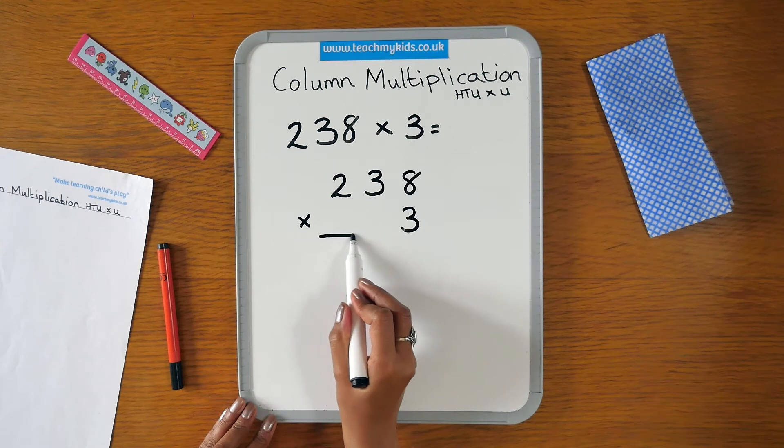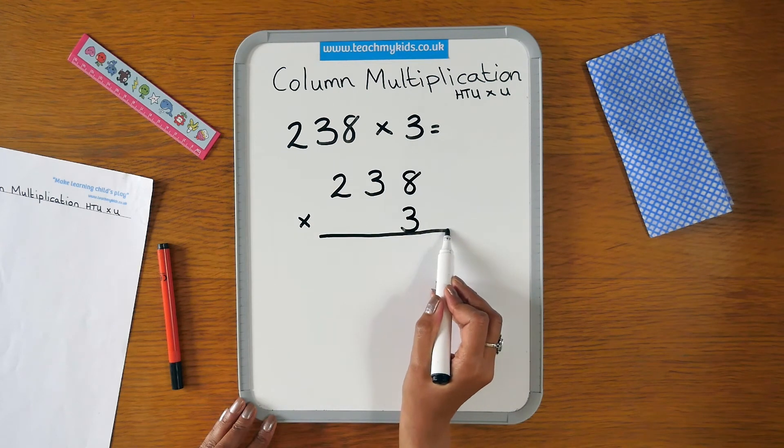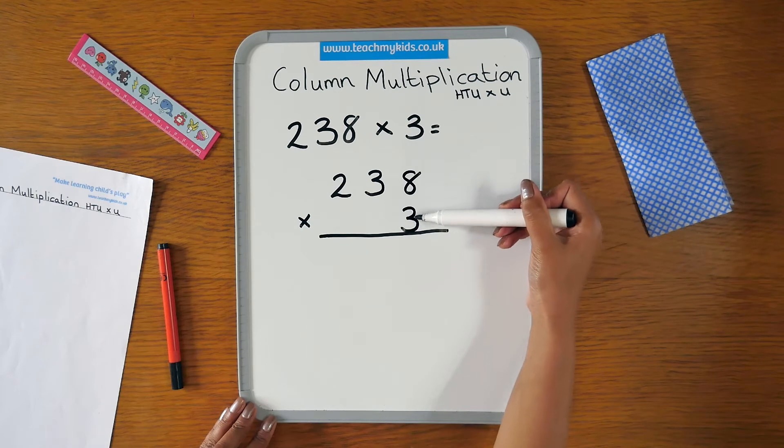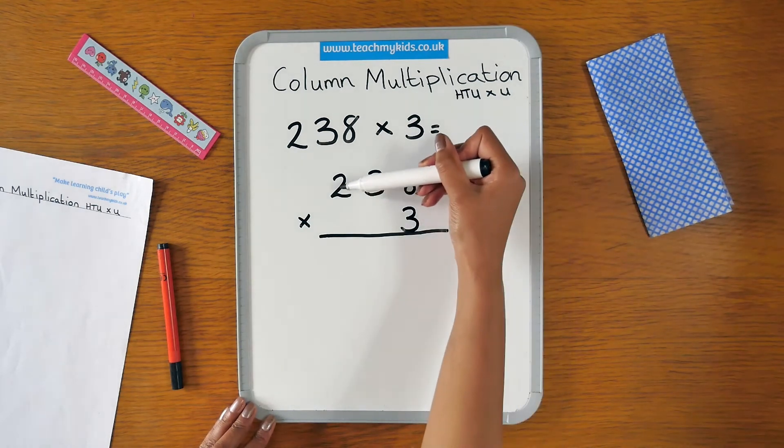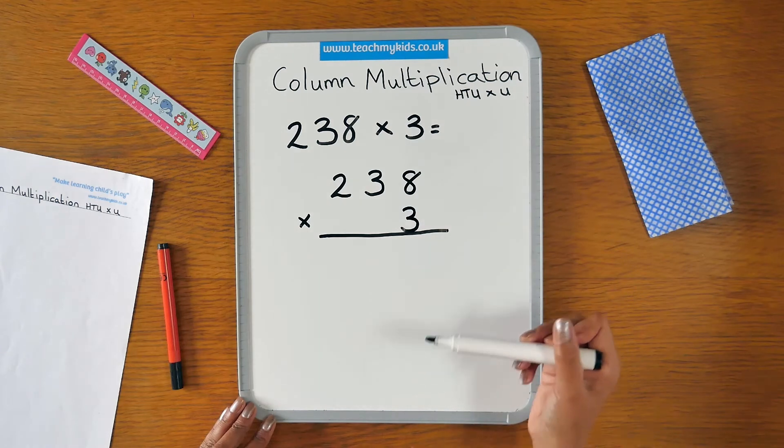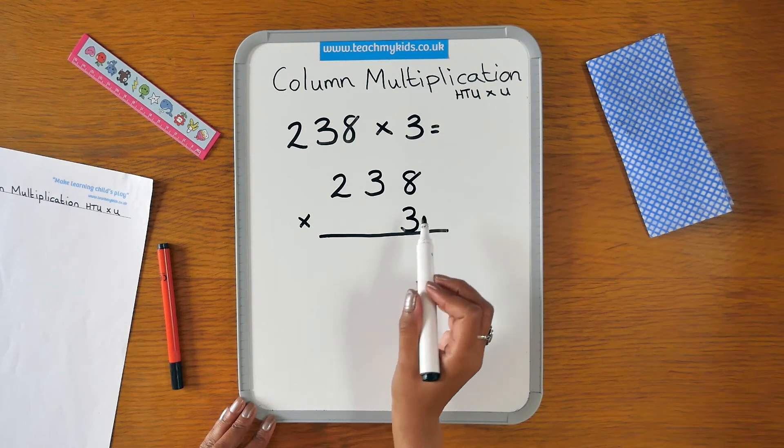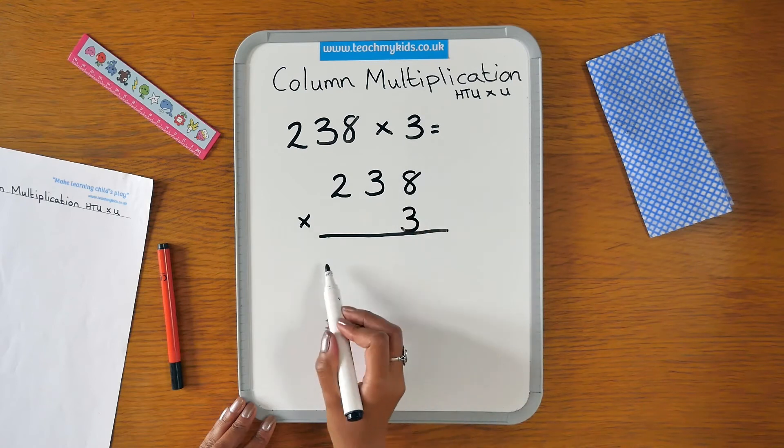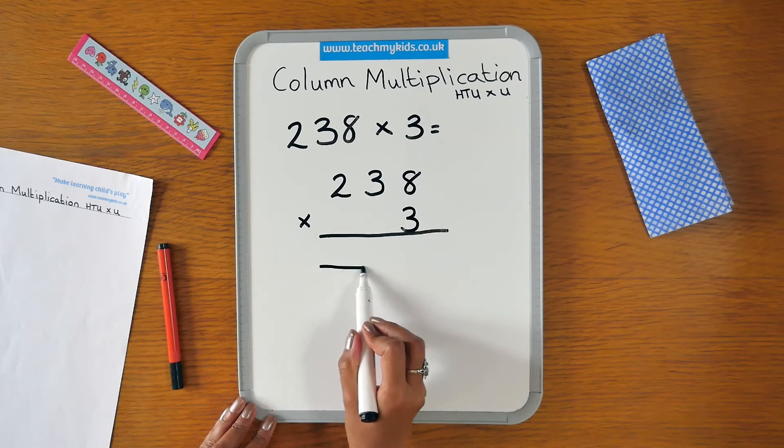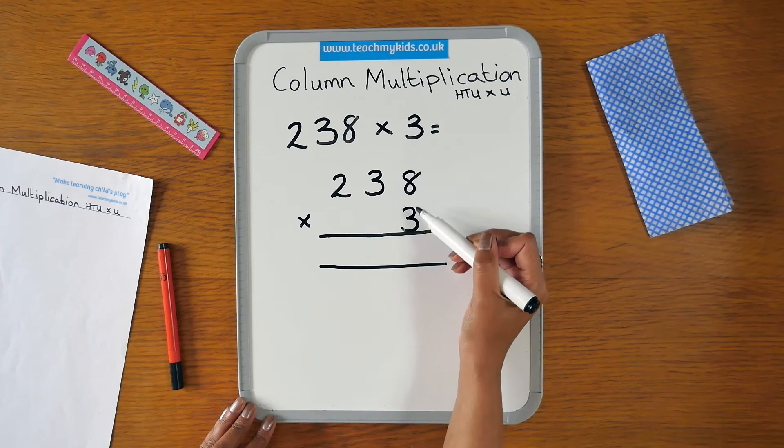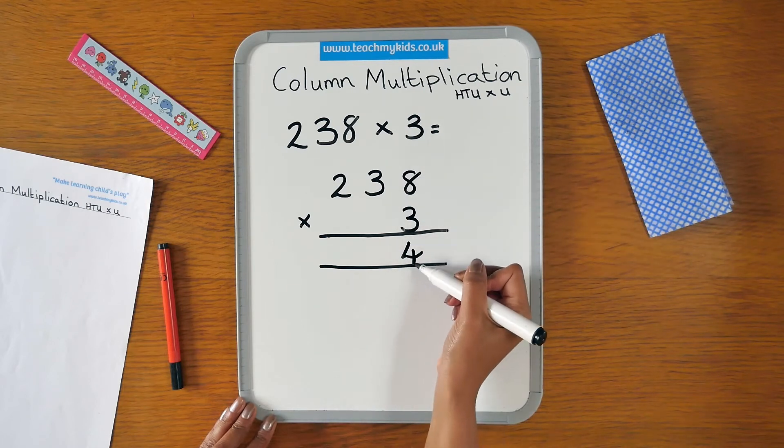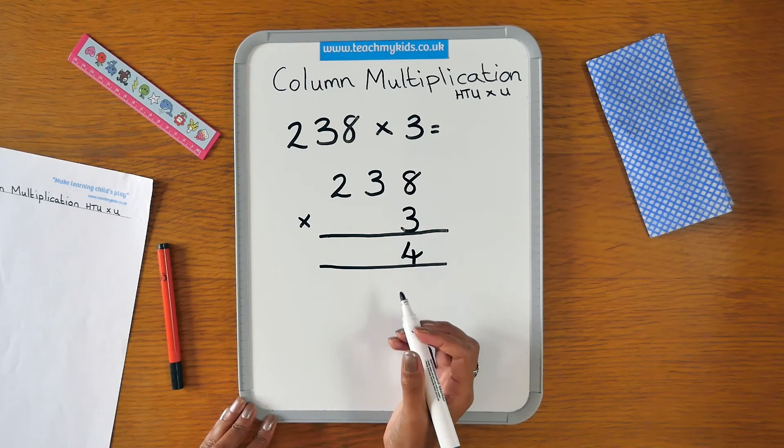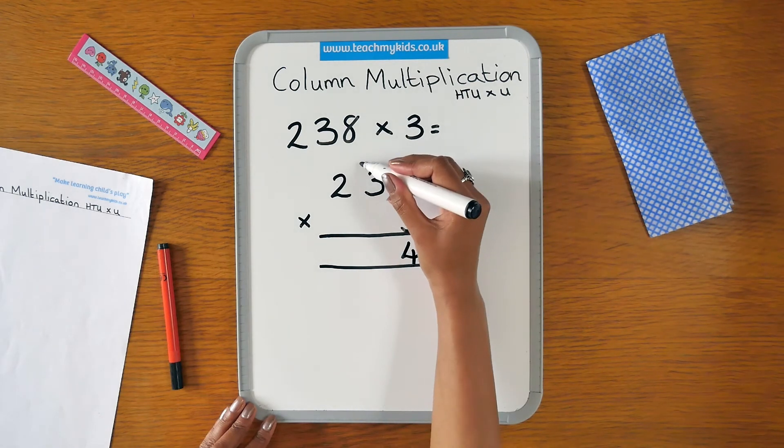You can then draw a line underneath. We need to start from this side and multiply the units first, then the tens and then the hundreds. So the first thing we need to do is 3 times 8. 3 times 8 is 24. So we place the 4 in the units column and we're going to carry the 2. We can put the 2 up here.